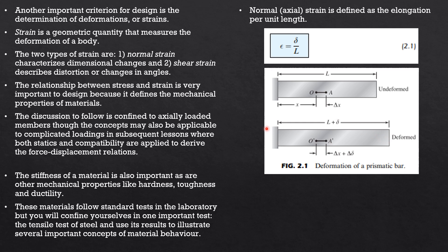In the deformed shape, the length becomes L plus the deformation. Points O' and A' now have the original length plus a slight change in length, denoted by delta d. This illustrates the deformation of a prismatic bar, as shown in the book by Pytel and Kiusalaas. The units of strain are mm per mm or inch per inch, and it may be interpreted as unitless.